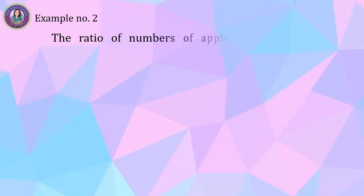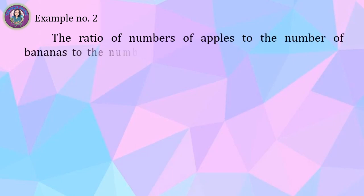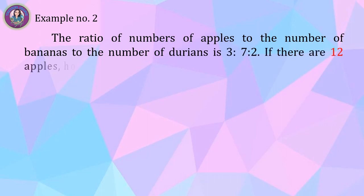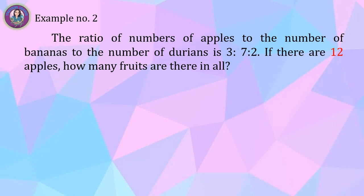Example number two: the ratio of the number of apples to the number of bananas to the number of durians is 3 to 7 to 2. If there are 12 apples, how many fruits are there in all? We are looking for the total number of fruits, given that there are 12 apples and the ratio 3 to 7 to 2. We can use a diagram to get the answer.